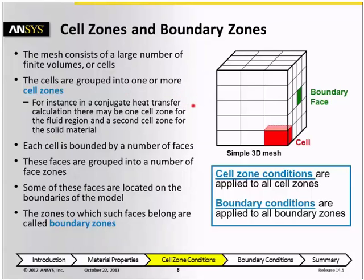If you have a conjugate heat transfer problem, there might be one cell zone for the fluid region, and another cell zone for the solid region.